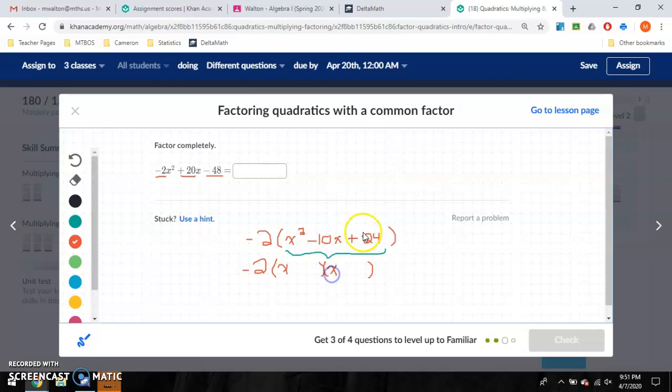I have two numbers that multiply to a positive that add up to a negative. I know that both of these will have to be negative. And then finally, two numbers that multiply to 24 that add up to 10. That would be a 4 and a 6. So that is my final answer. I have negative 2 times x minus 4 times x minus 6.